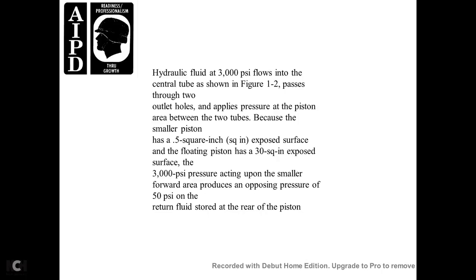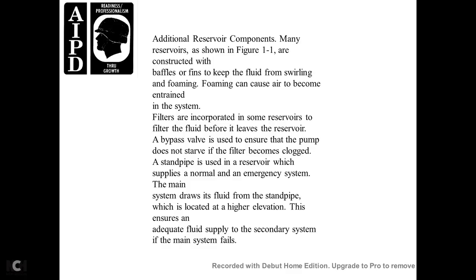Hydraulic fluid at 3,000 psi flows into the central tube shown in figure 1-2 and passes through the two outlet holes, supplying pressure to the piston area between the two tubes. Because the smaller piston has 5.5 square inches of exposed surface and the floating piston has 33 square inches of exposed surface, the 3,000 psi pressure acting upon the smaller forward area produces an opposing pressure of 50 psi on the return fluid stored in the rear of the piston.